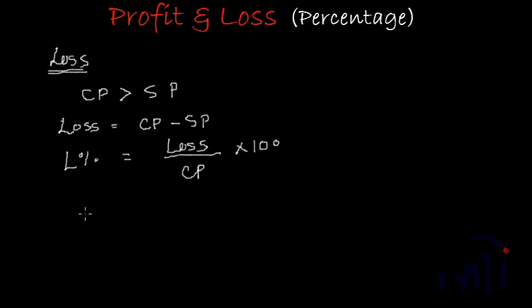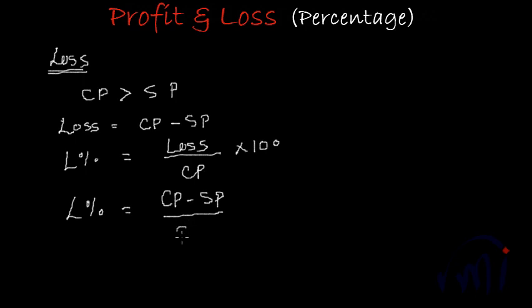Writing loss percent in terms of cost price and sale price: L% = (CP − SP) / CP × 100. This is the formula to find the loss percentage when you are provided with the cost price and the sale price.